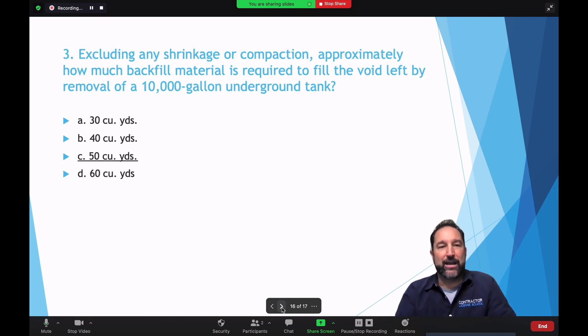How about number three? Excluding any shrinkage or compaction, approximately how much backfill material is required to fill the void left by removal of a 10,000 gallon underground tank? Well, as you can see here, 30 cubic yards, 40 cubic yards. No, it's 50 cubic yards. C would be the answer. Of course, D, 60 cubic yards. That would eliminate that one, right? So this is just an example of three of the types of questions that you're going to find on your exam.